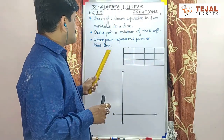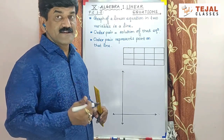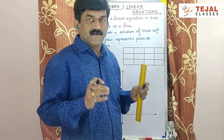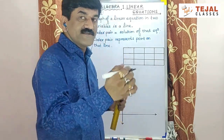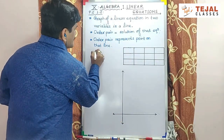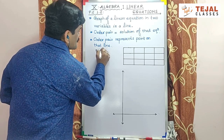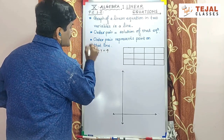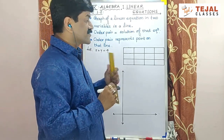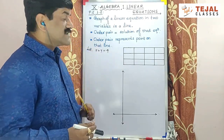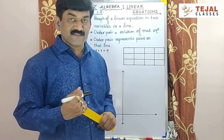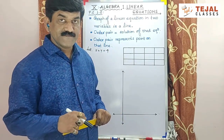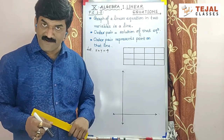Let's take a particular equation: x plus y equal to 4. हम इसे draw करते हैं. यह हम लोगों ने एक equation ले दिया और इसे हमें draw करना है. इस linear equation की line draw करनी है, मतलब graph draw करना है. मैंने यहां पर prepare करके रखा है, I'll explain you one by one.